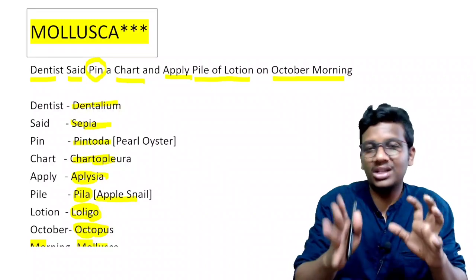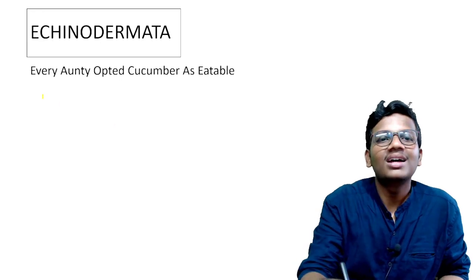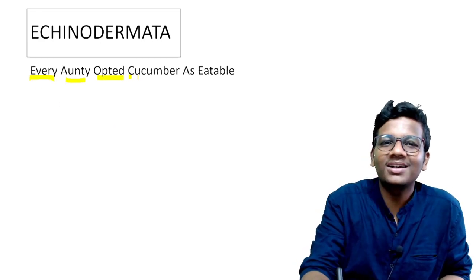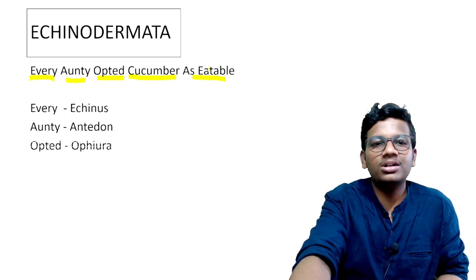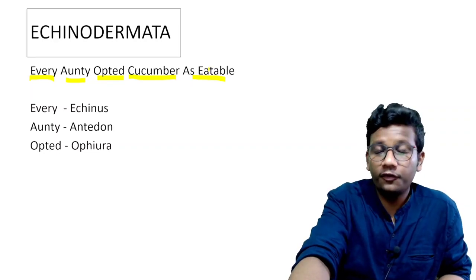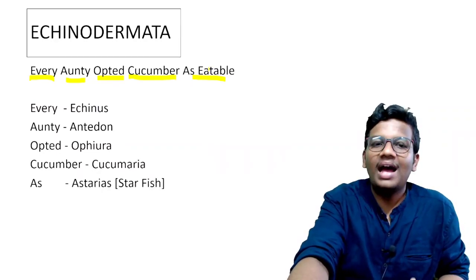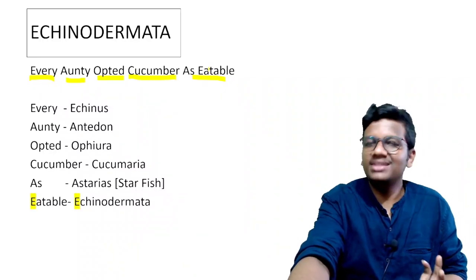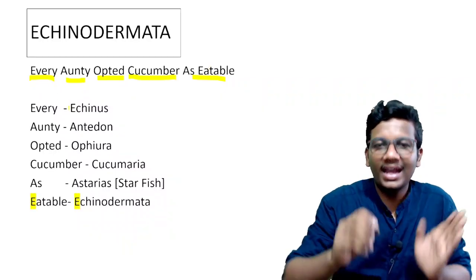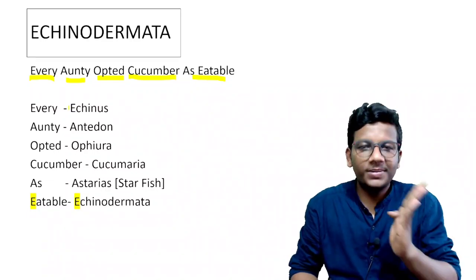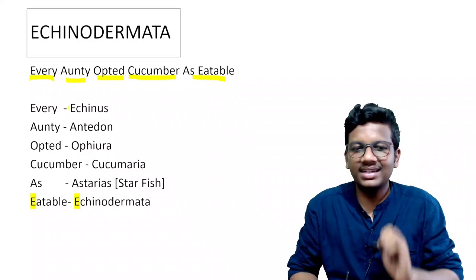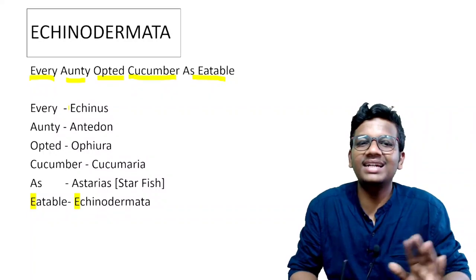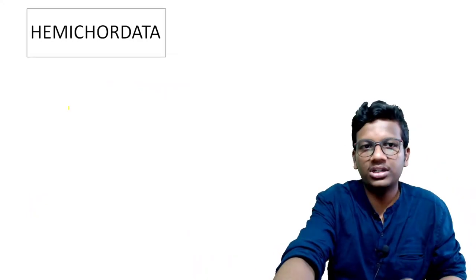The next phylum is Echinodermata. The mnemonic is: 'Every anti-opted cucumber as eatable.' Every = Echinus, anti = Antedon, opted = Ophiura, cucumber = Cucumaria, as = Asterias (starfish), eatable = Echinodermata. Asterias is called starfish — very important. So all these examples fall under Echinodermata.